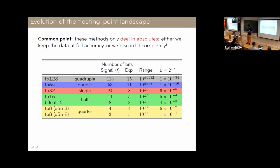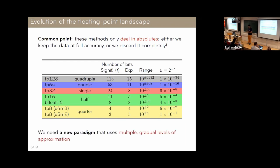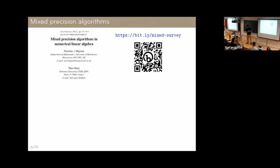Nowadays, as you can see in this table, we have many different types of floating-point precisions. In particular, there is an emergence of lower precisions — half and even quarter precision, so 16-bit or 8-bit formats. These are very fast and efficient on modern hardware, but obviously less accurate. The idea I'm going to propose is a new paradigm that tries to use not just one level of approximation but multiple levels in a gradual approach.